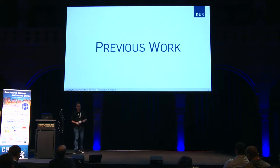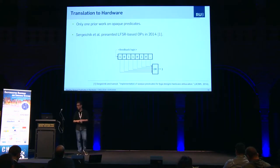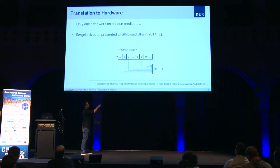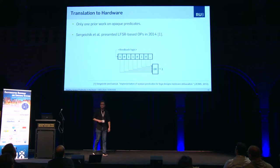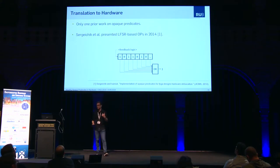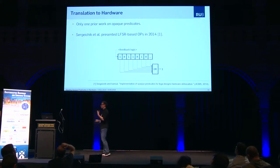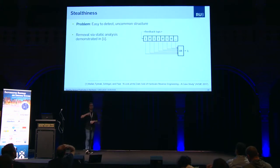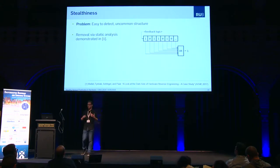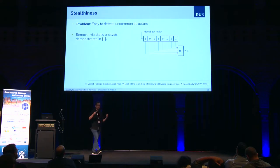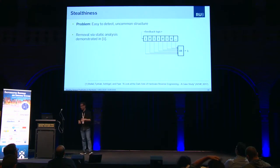So, previous work. There was only one prior work on hardware opaque predicates by Sergeitschik et al. What they did is they instantiated an LFSR — a linear feedback shift register — and all these state bits go to an OR gate. Because an LFSR always has to have a Hamming weight of at least one, the OR gate will always output one. So this is a valid opaque predicate: you have a dynamic state, but the output is always one. The problem is it's very easy to detect and very uncommon. Detecting LFSRs in a design is kind of easy — it's a self-contained module. And you cannot imagine any use case where you would genuinely OR all the output state bits of your LFSR together. So this can easily be found and removed by static analysis, as also shown by Vallad et al.